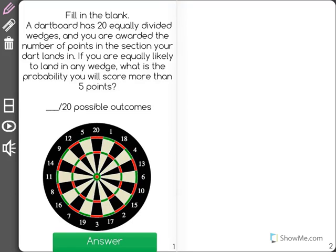Fill in the blank. A dartboard has 20 equally divided wedges, and you are awarded the number of points in the section your dart lands in.